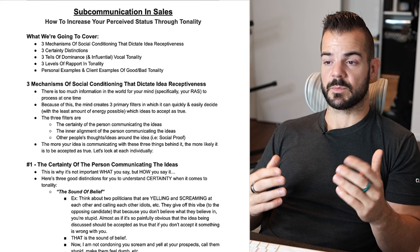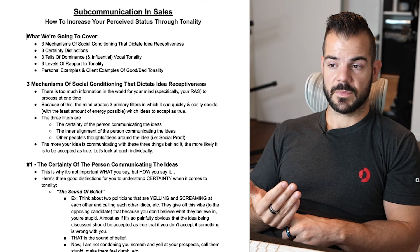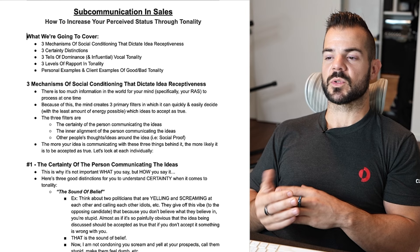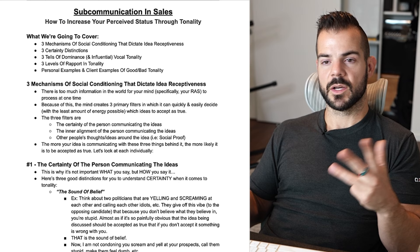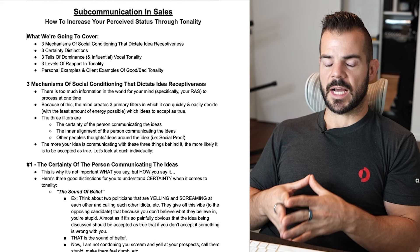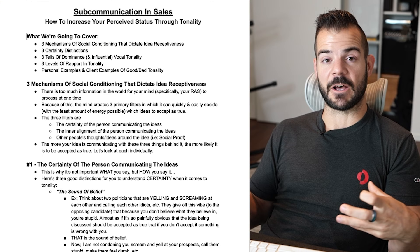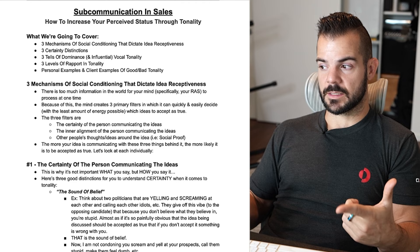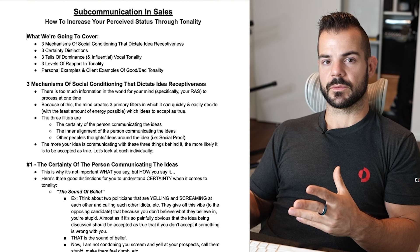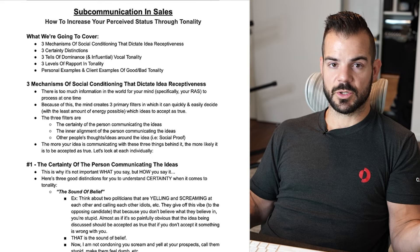We have three primary mind filters that allow us to quickly and easily decide — using the least amount of energy possible, because biologically we want to conserve energy — which ideas to accept as true. Those three filters are: the certainty of the person communicating the idea, the inner alignment of the person communicating the idea, and other people's thoughts and ideas around the idea — aka social proof. The more you communicate with these three things as a foundation, the more likely someone is to accept what you're saying as true.